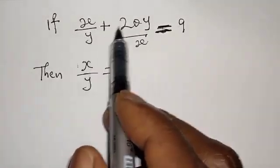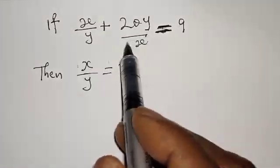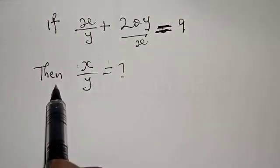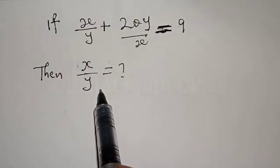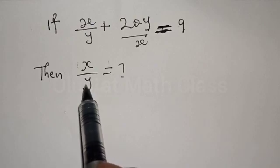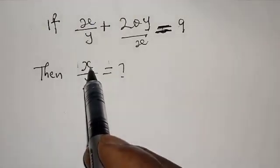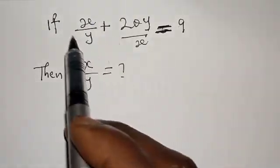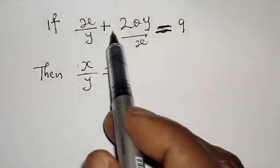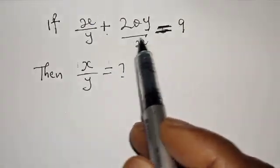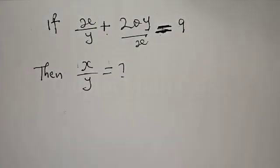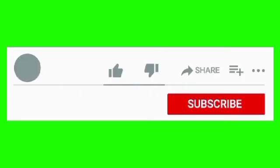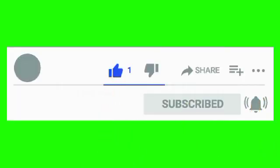If x over y plus 20y over x is equal to 9, then x over y is equal to what? Hi everyone, welcome to my class. In this class we want to find the value of x over y from this given equation: x over y plus 20y over x is equal to 9. Before we proceed, please don't forget to like, share, comment, and subscribe.